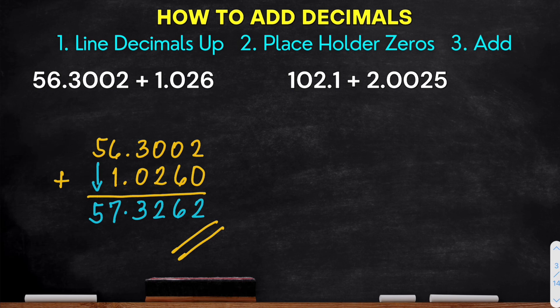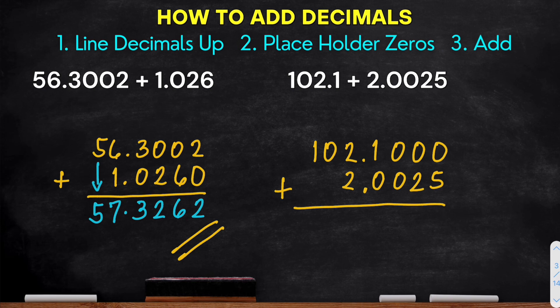For our last example, we have 102.1 plus 2.0025. So again, the decimal points should be aligned. Then 2.0025. Got it? Then placeholder 0. So we have 3 holder 0s. And then for the last step, add.